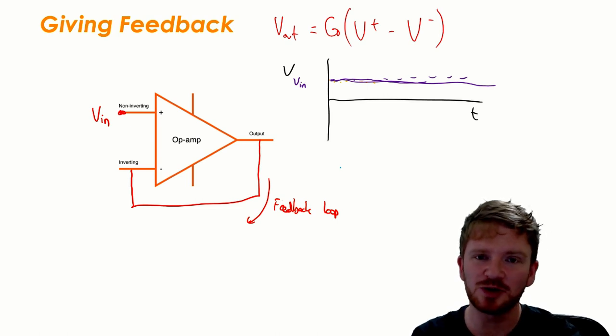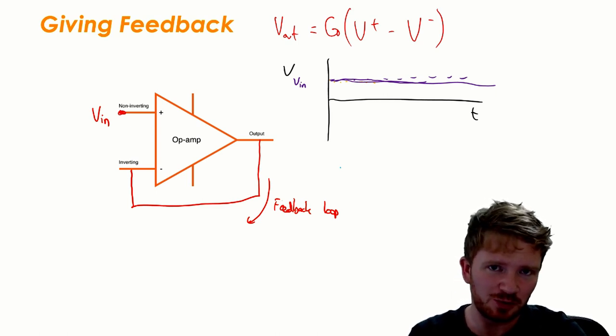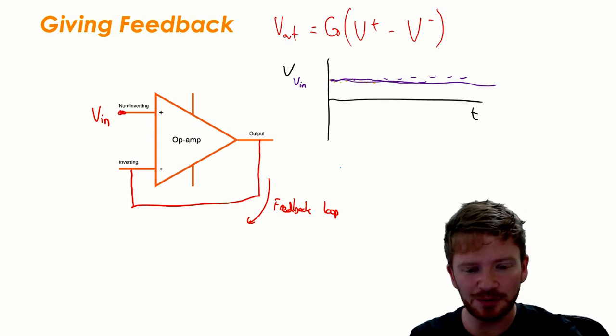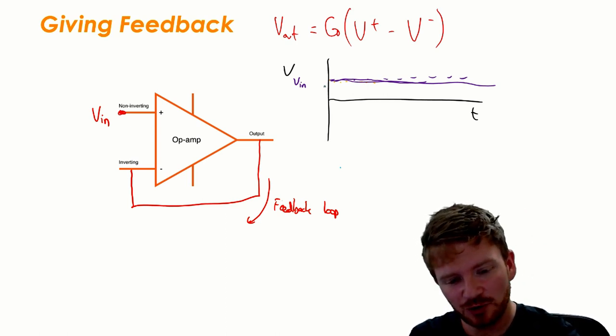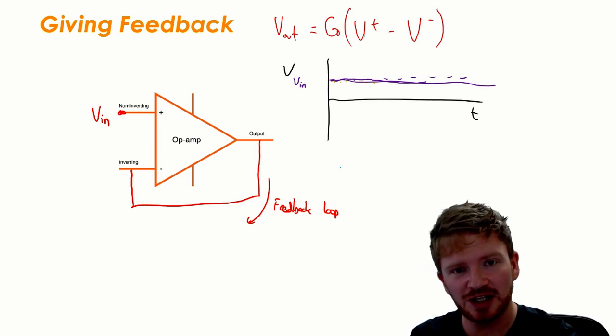So what will happen when I switch on this whole device? Well presumably the output will start at zero volts because when it's switched off it is giving out zero. So what will happen? Well I've got V in going into the non-inverting input over here and I have zero as my output.